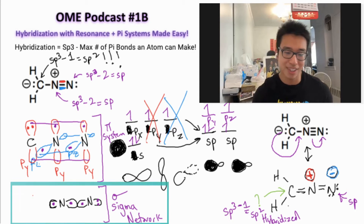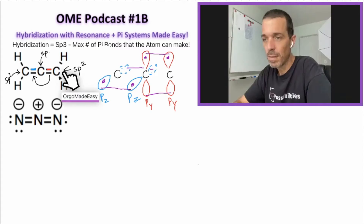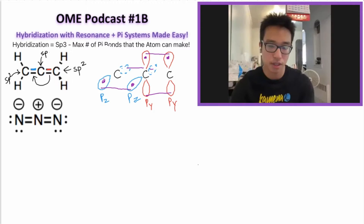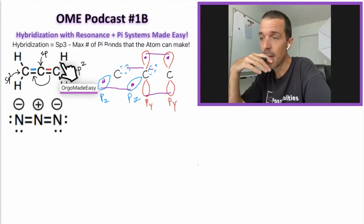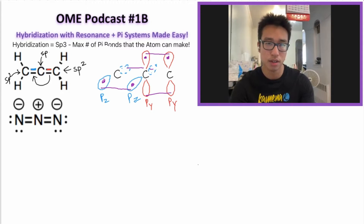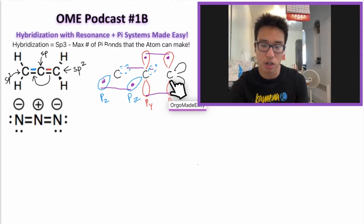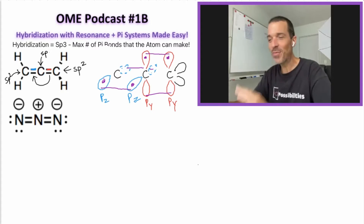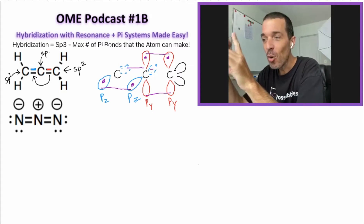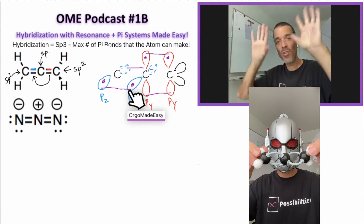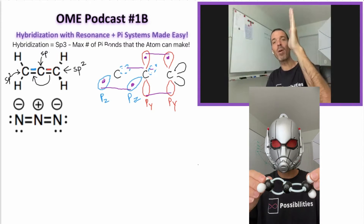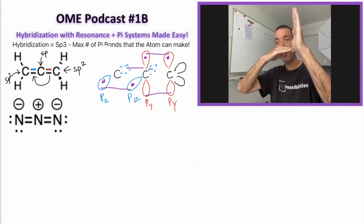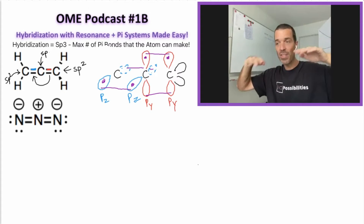Now we'll drop in the sigma network. The right carbon is sp2 hybridized. It has an sp2 orbital reaching out to the hydrogen and to the left carbon. The central carbon, which is sp hybridized, has an sp orbital coming out to bond. We have a pi bond followed by another pi bond, and all the electrons and bond angles must be correctly arranged — that's VSEPR theory.